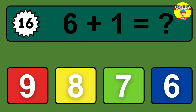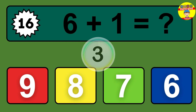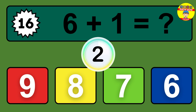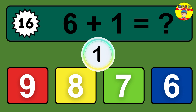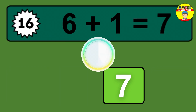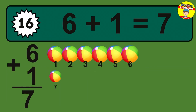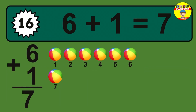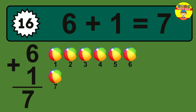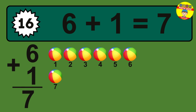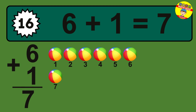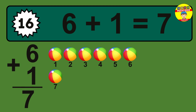Question 16. 6 plus 1 equals what? The answer is 6 plus 1 is 7. Let's count it: 1, 2, 3, 4, 5, 6, 7.